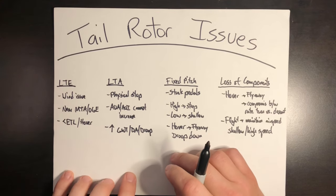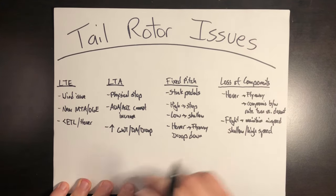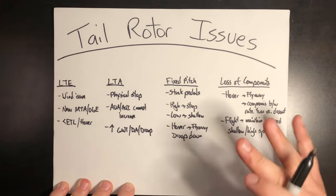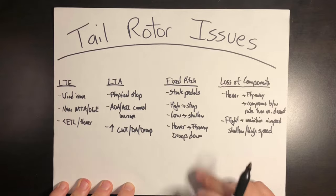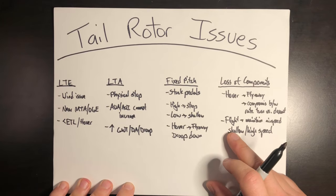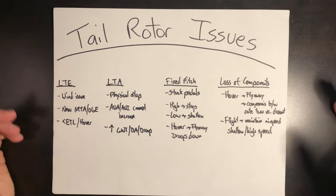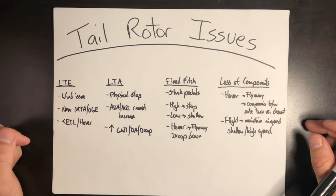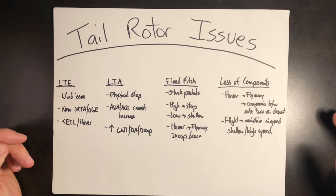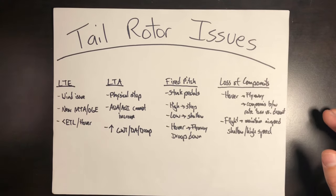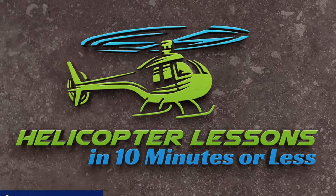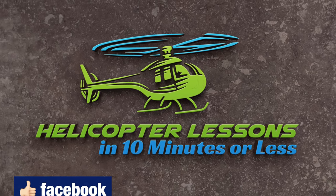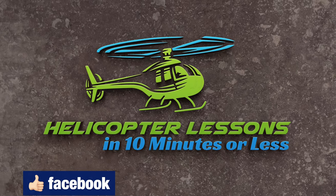That wraps up this video. One takeaway for all of these is that airspeed is your friend. Above ETL, you're too fast for really the first two issues, and around your max rate of climb, endurance airspeed, or cruise speed, you offload the need for the tail rotor for the second two. We can't always pick when and where problems occur in an aircraft, so always practice the what-if scenarios. Thanks for watching. I'm Jacob — stay flying. I'll see you next time.